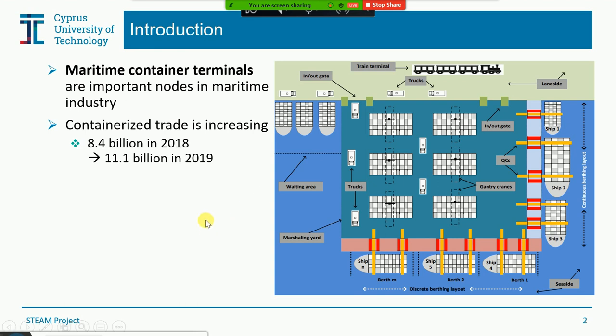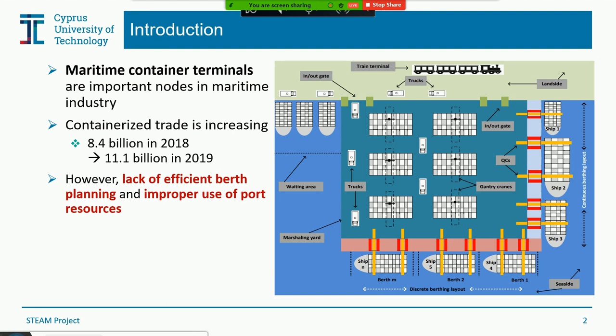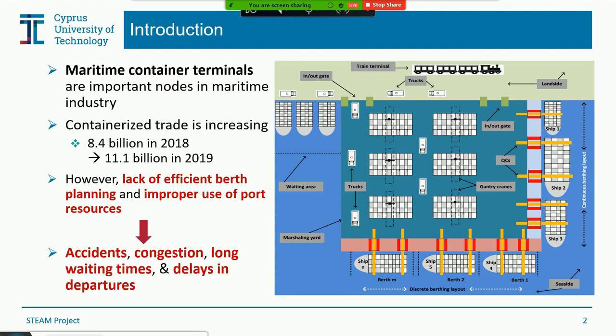Global containerized trade is increasing day by day. In 2018, global maritime containerized trade was 8.4 billion tons, which increased in 2019 to 11.1 billion tons. However, lack of efficient berth planning and improper use of port resources increases several problems, such as accidents at sea, congestion at port, long waiting times for vessels before optimal berthing, and delays in vessel departures.